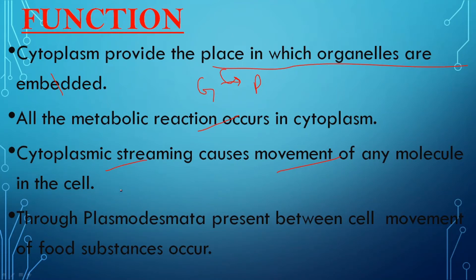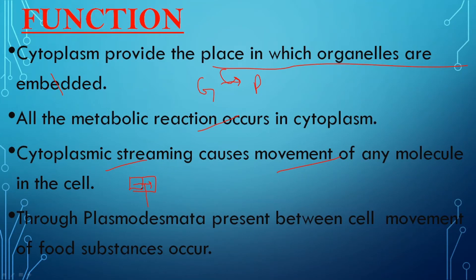Furthermore, because of cytoplasmic streaming, there is another function. Between two cells, in between their plasma membranes, there is a small pore or passage called plasmodesmata. Due to cytoplasmic streaming, cytoplasm from one cell moves to another cell, and as it moves it also carries molecules like glucose, amino acids, and nutrients from one place to another.